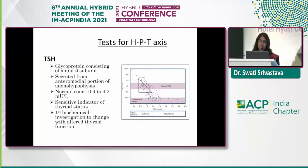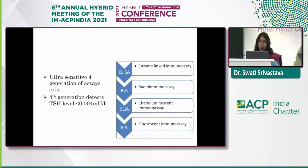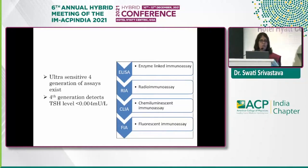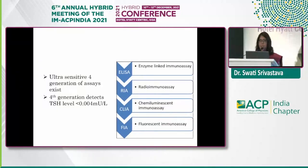TSH is an important, sensitive indicator and screening test for most cases. We now have ultra-sensitive fourth-generation assays that can detect values as low as 0.004 mIU/L. Two decades ago, we relied more on thyroid hormones, but with such advanced assays, TSH is now a valid indicator even for hyperthyroidism. Various assay platforms include ELISA, radioimmunoassay, chemiluminescent assay, and fluorescent immunoassay, with CLIA being the most commonly preferred.